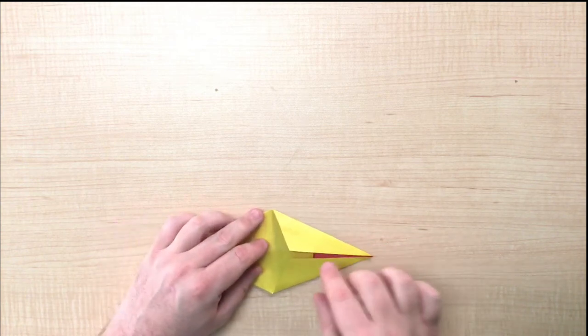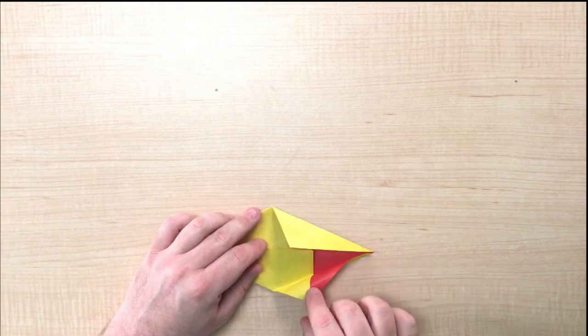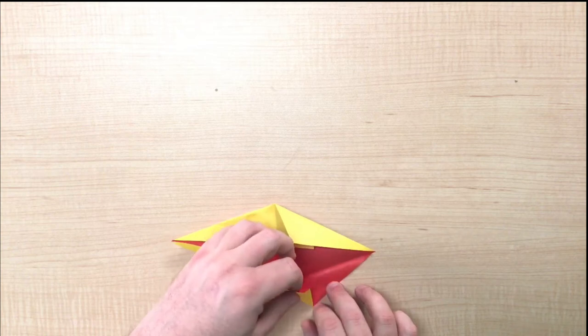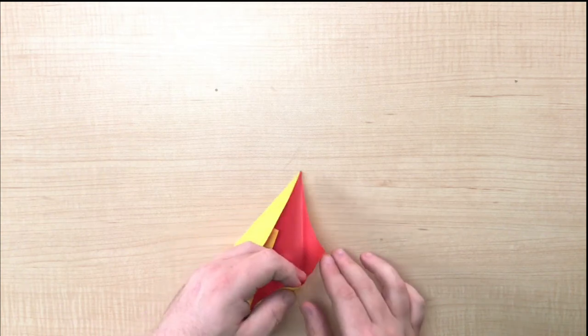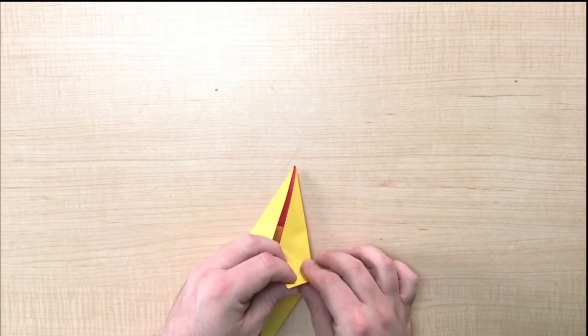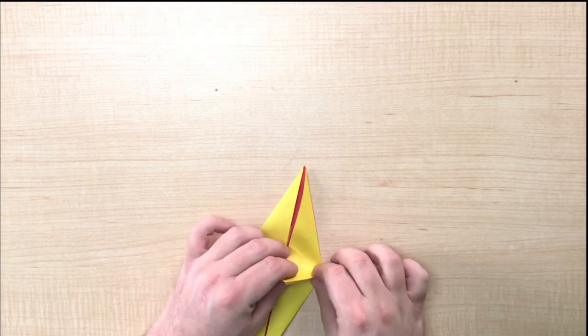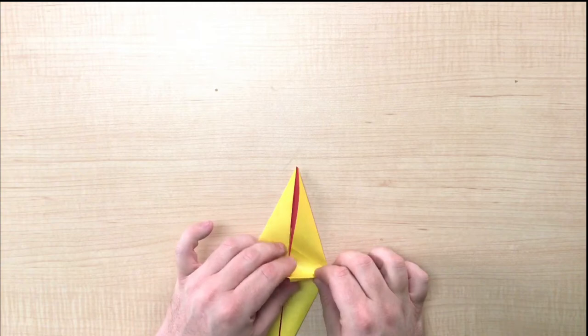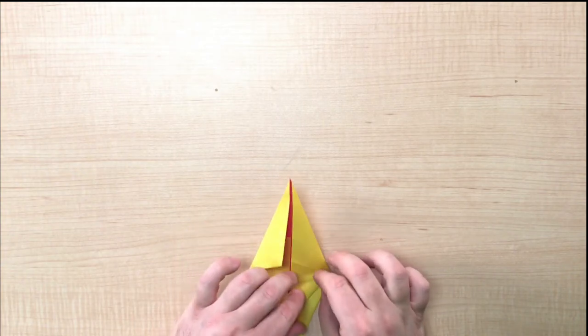Next, open up the bottom fold that you've just made revealing the first fold and bring it out with a slight pinching motion. Create a little flap in the middle of your origami paper and then fold it down.